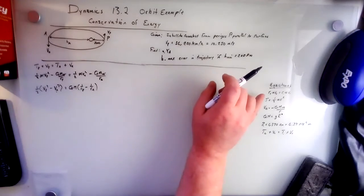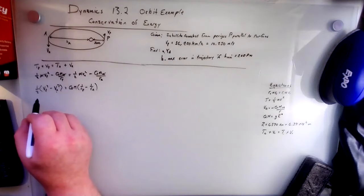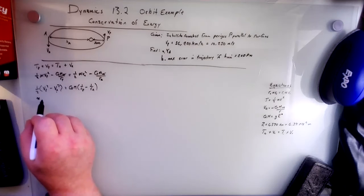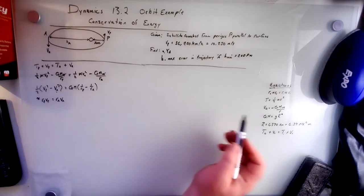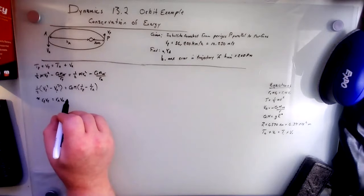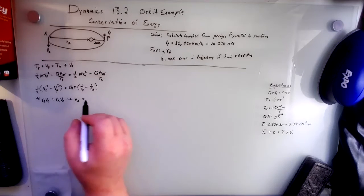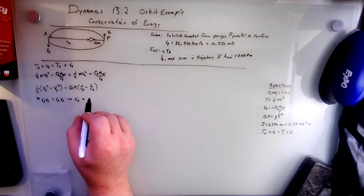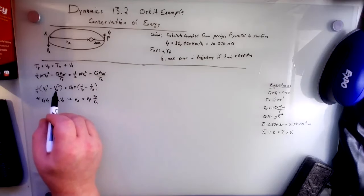And what we can do is we can use the conservation of momentum, right? So here, we'll say RP vP equals RA vA, where we drop the masses because they showed up in both equations. And this allows us to find this relation vA equals vP RP over RA. And we'll substitute that in here.